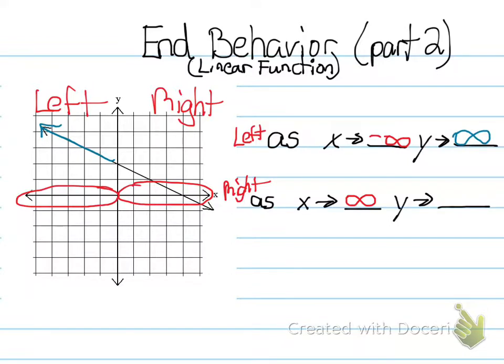Now, looking at the right side of the graph, the line is going down. So that means it's going to negative infinity. So in the second statement where I said as x approaches positive infinity, my y approaches negative infinity. And that's it!